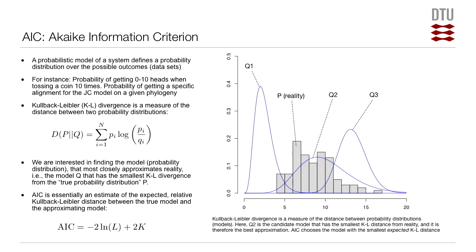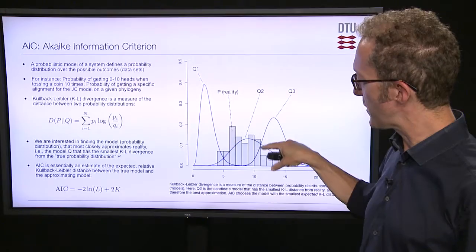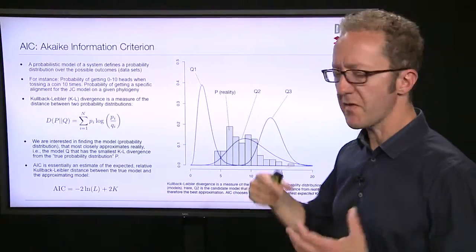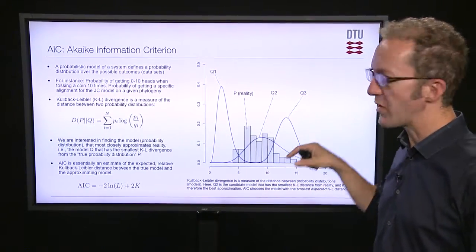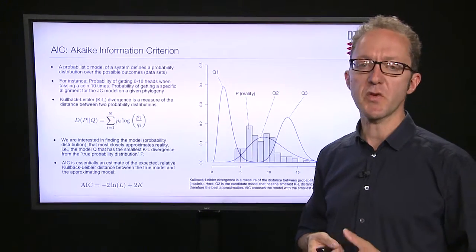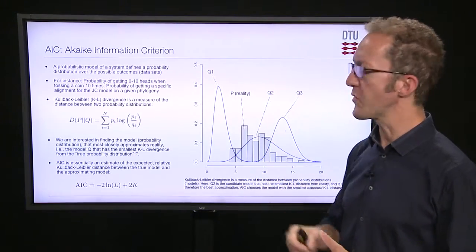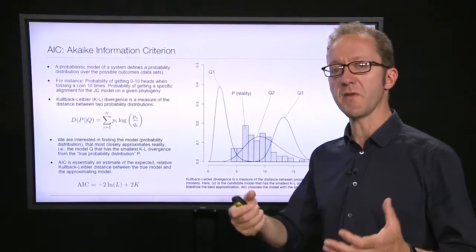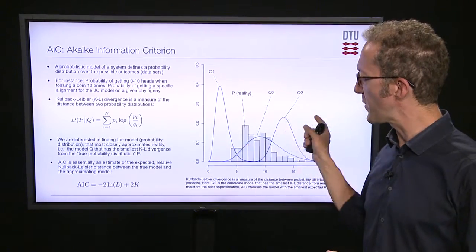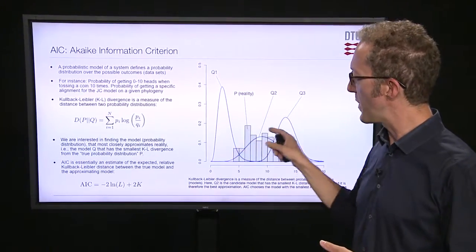On this slide, using a histogram in an imaginary example, I've shown the probabilities of different possible data sets — that's reality, that's how the world really looks. In blue lines I've sketched three different possible models — Q1, Q2, and Q3 — that we try to fit to that reality. In this particular case, Q2 is closest to the real probability distribution; it would have the smallest Kullback-Leibler divergence and therefore would be the model we choose.